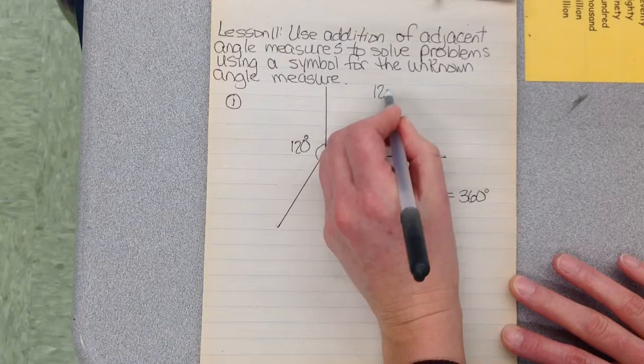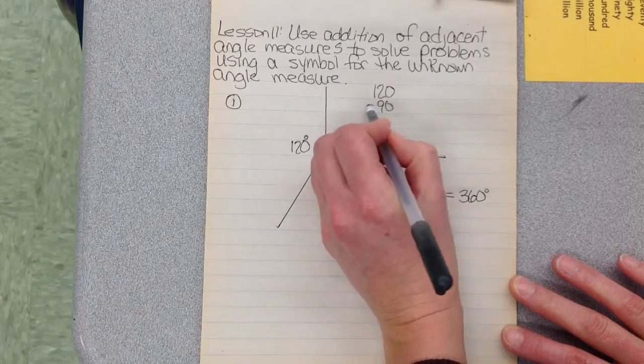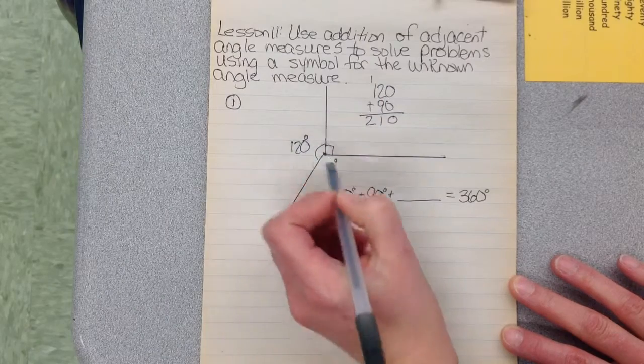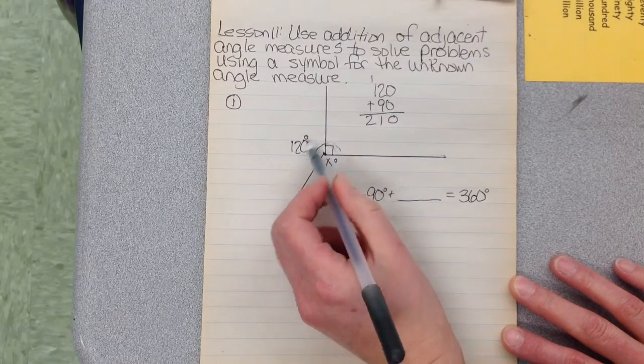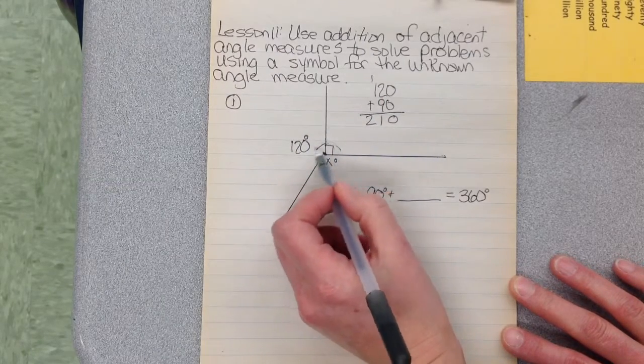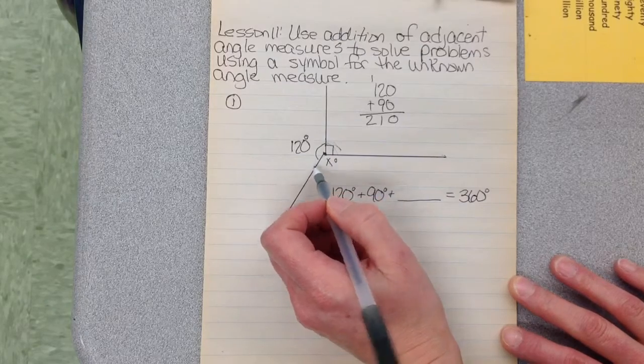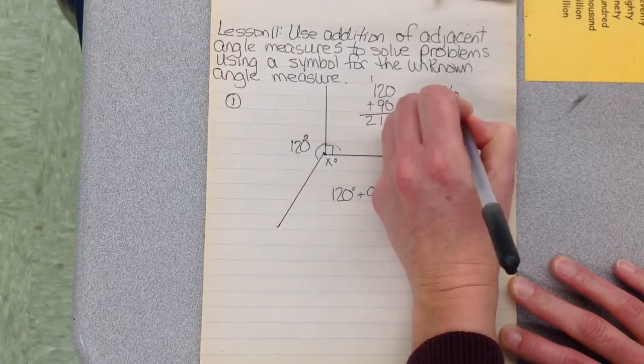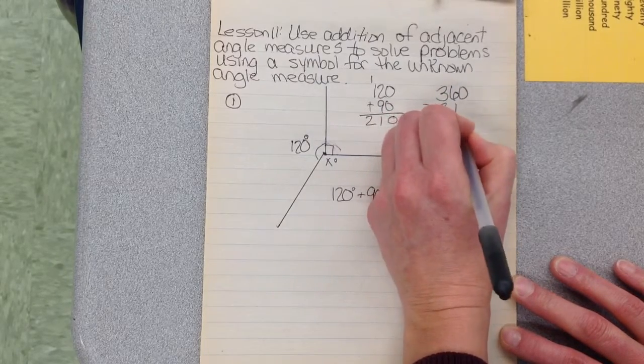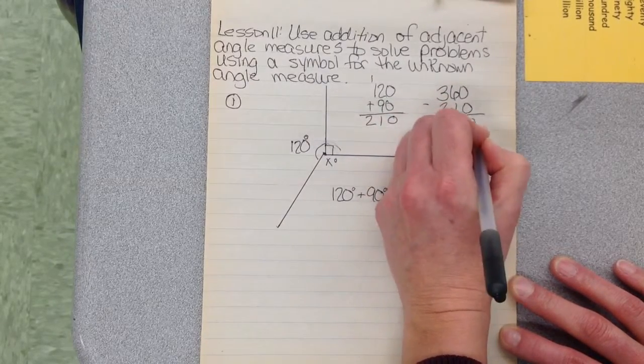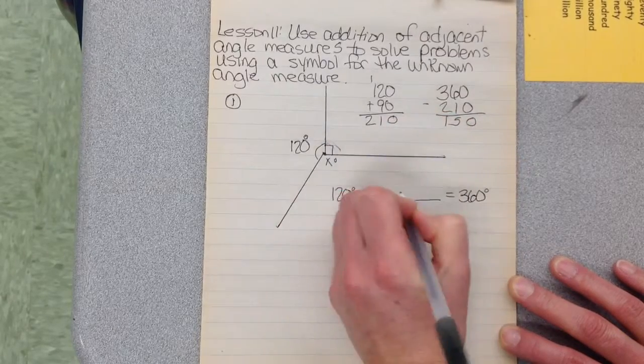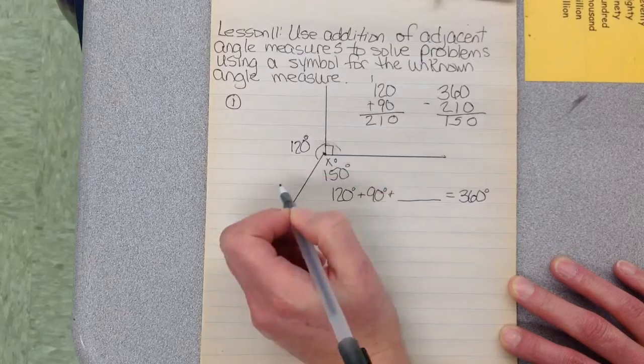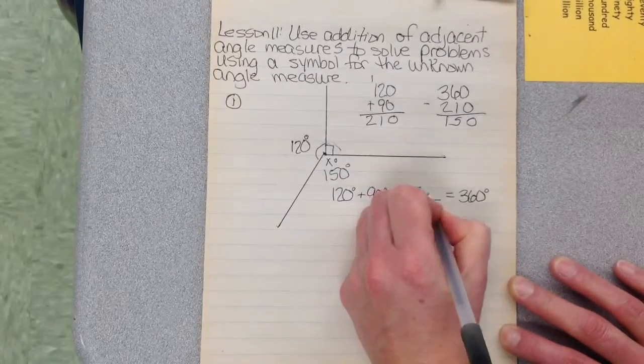So you can take 120 plus 90. That's going to give us 210. So together this is 210 and that makes sense. You can see that this is more than 180 when you put them together. Now you're going to take 360 and subtract your 210, and you're going to get 150.